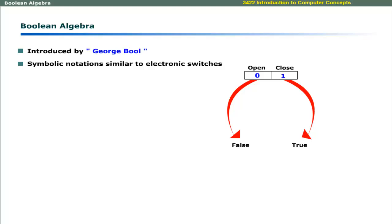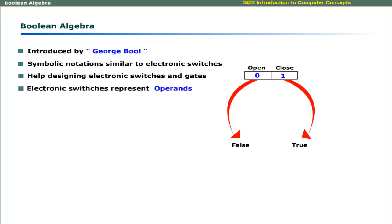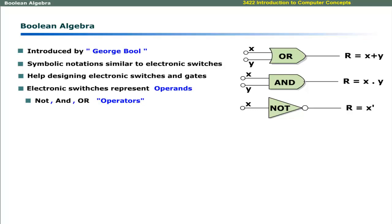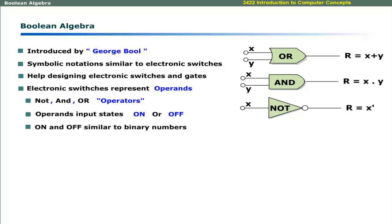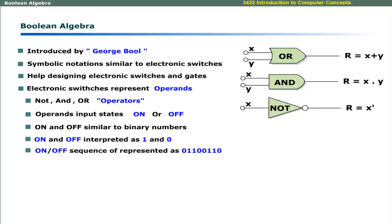The expressions of Boolean algebra help to design electronic switches and gates. The electronic switches are considered operands, and NOT, AND, OR are operators, physically represented by logical gates. The operands take input in two states — on or off — which is analogous to the binary number system. The on-off state or sequence of on-off states is interpreted as a binary number sequence.